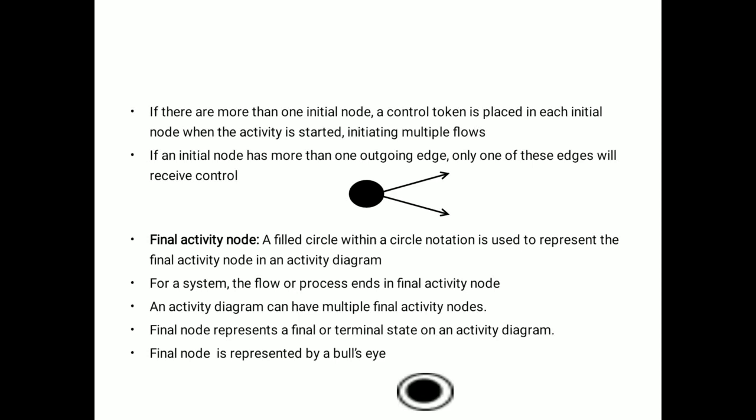For example, in a system, the flow or process ends in the final activity node. An activity diagram can have multiple final activity nodes. Final node represents a final or terminal state on an activity diagram, represented by a bull's eye.